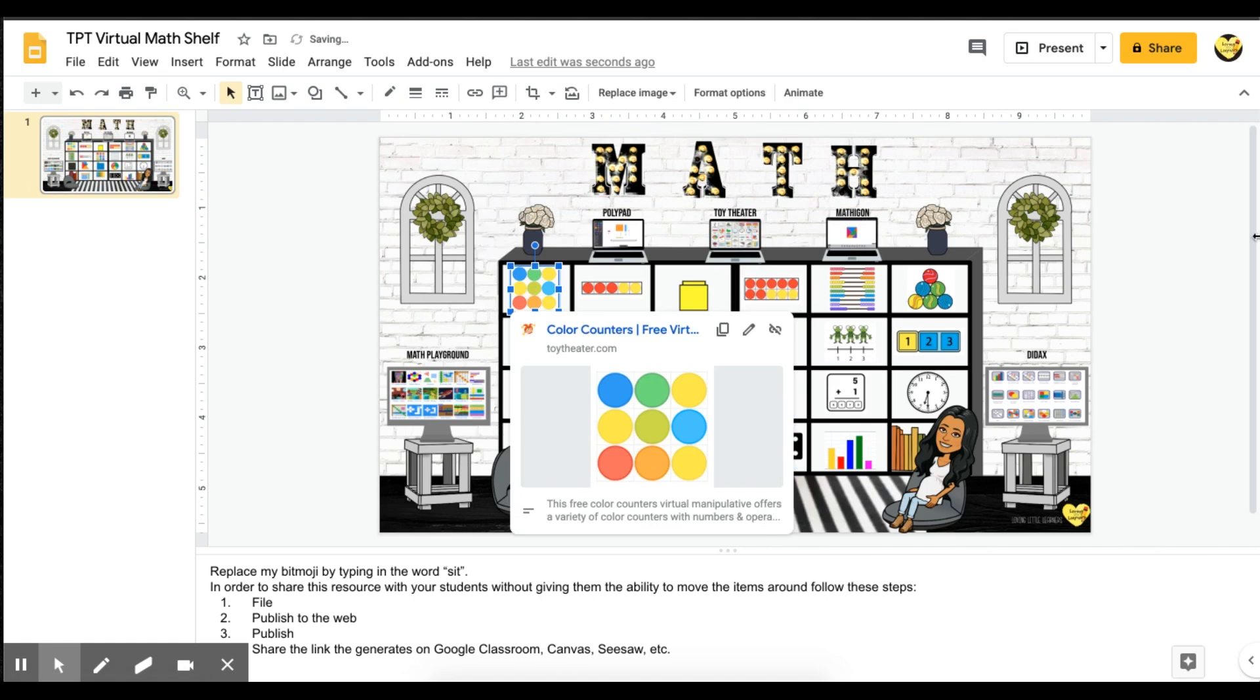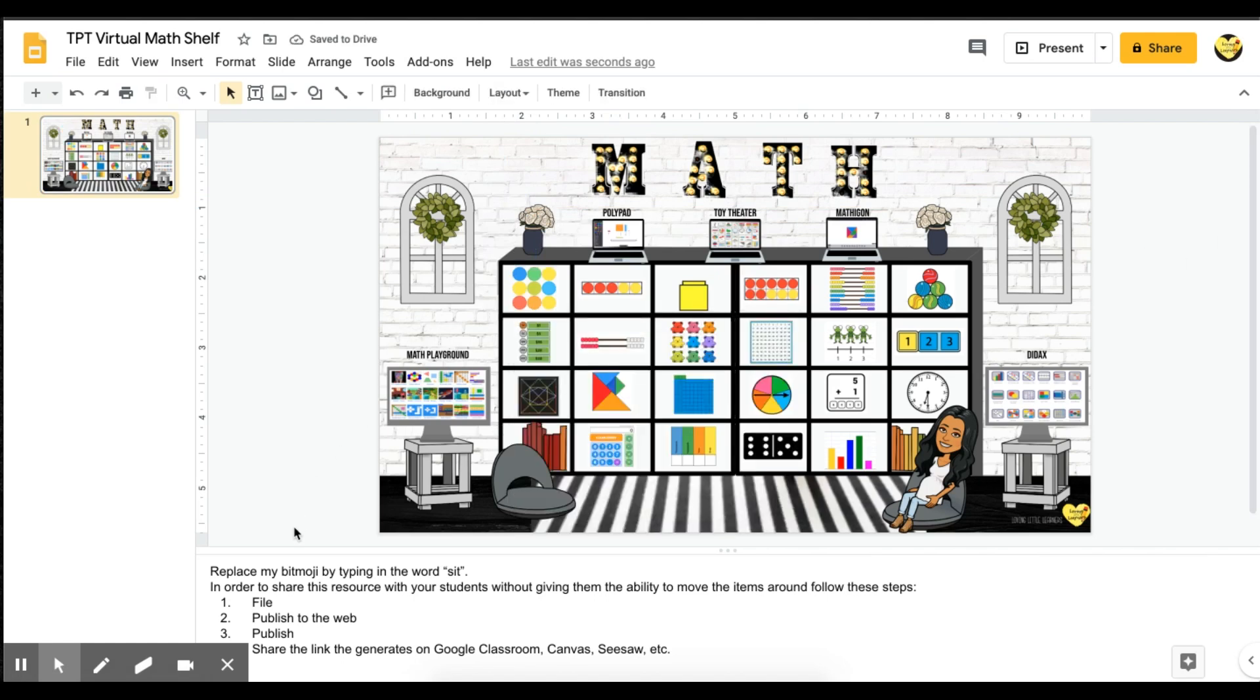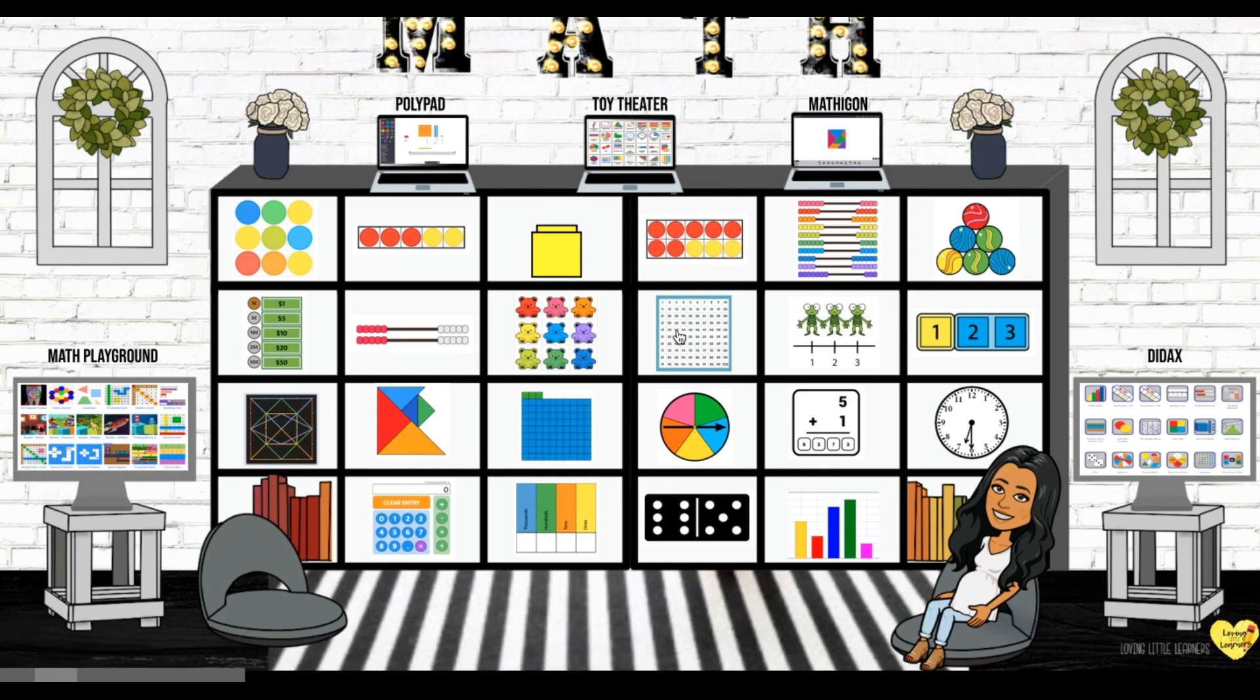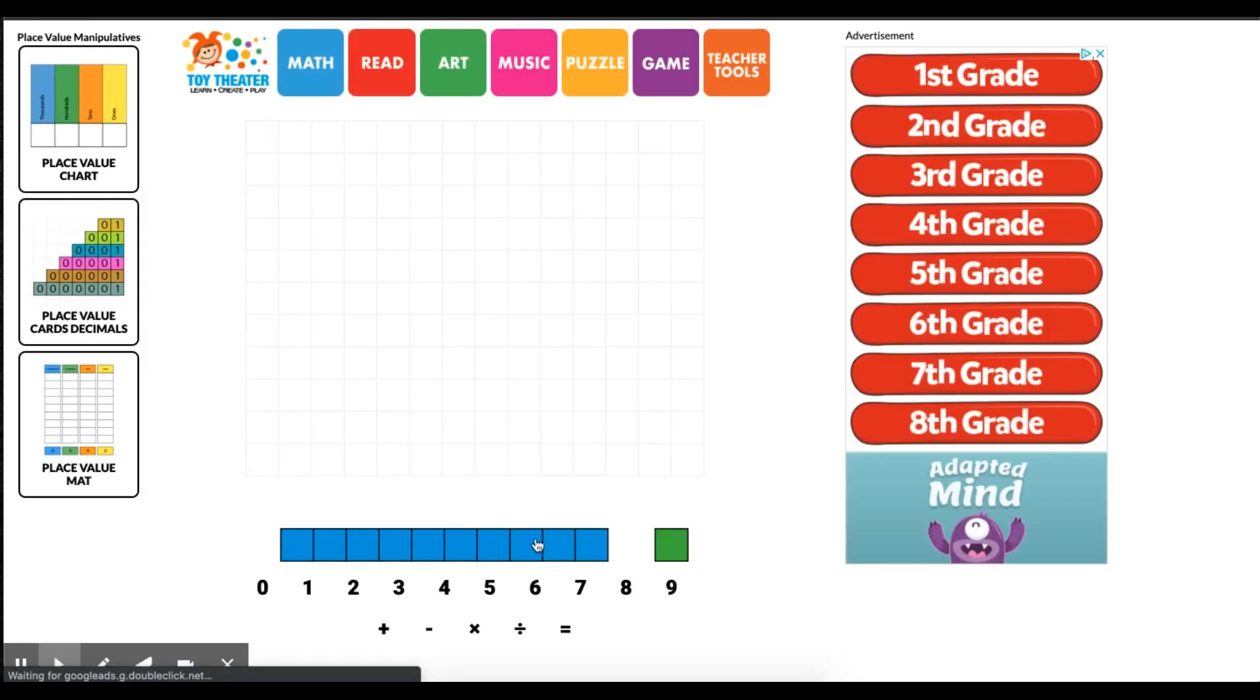So what you do, you go through a specific process to publish a room like this to the web so that your students aren't able to move anything, but they are able to go ahead and click on anything. So I can't move anything here, but I'm still able to click on the different resources and open them up and use them then.